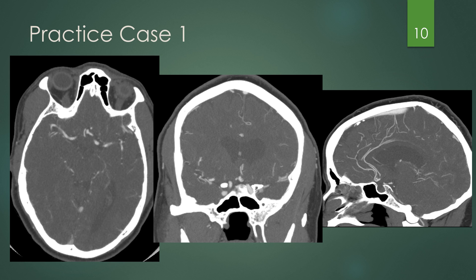Practice case one, shown in all three planes. When looking for aneurysms, follow each vessel — all vessels should have flow moving away from their origin. You're looking for a vessel that abruptly stops. In this case, you see the anterior communicating artery with a lobular outpouching projecting anteriorly that just stops and doesn't continue. Here it is on the coronal and sagittal views — the A2 branches continue on, but this saccular outpouching just stops. This is an anterior communicating artery aneurysm.